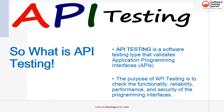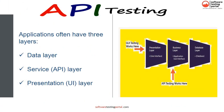API testing is a software testing type that validates Application Programming Interfaces. The purpose of API testing is to check the functionality, reliability, performance, and security of the programming interfaces. Applications often have three layers: data layer, service layer, and presentation layer. Since APIs lack a GUI, API testing is performed at the service layer.